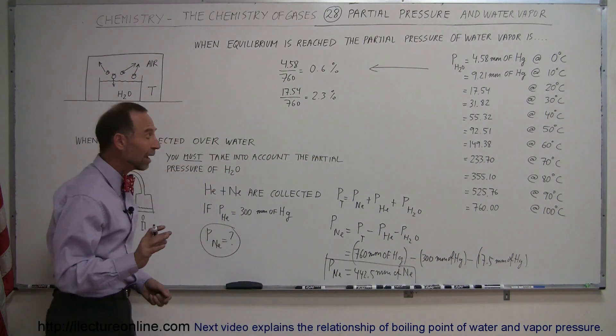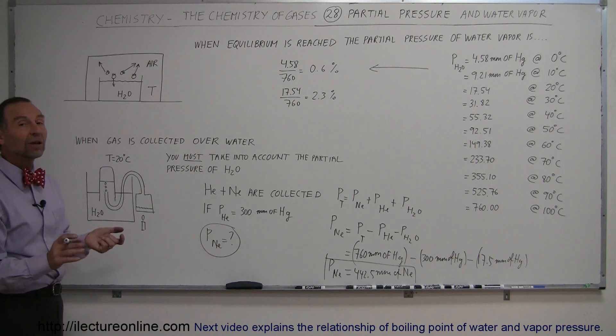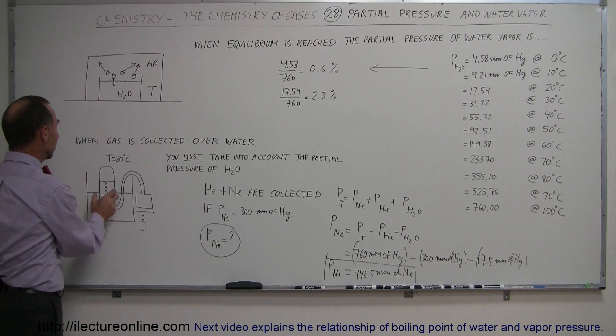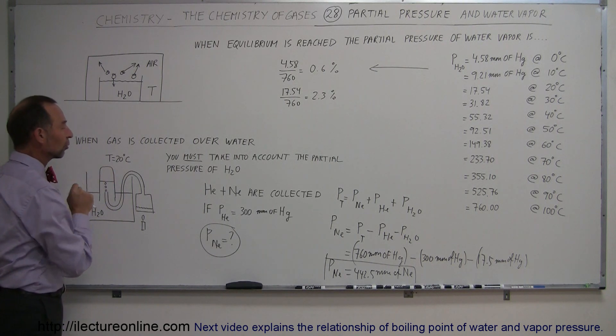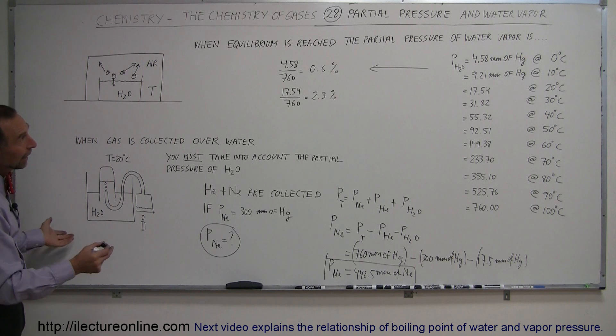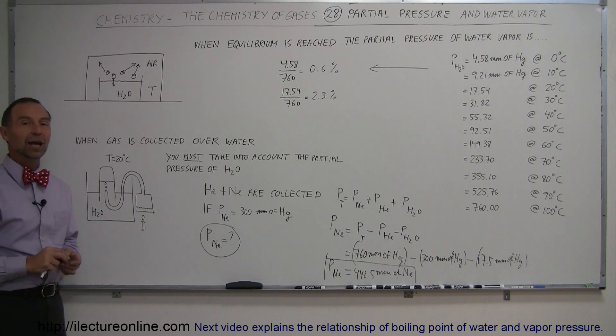So notice that we do have to take that into account in more ways than one. Here's one example: when we collect gases over water, part of the pressure that makes up the collected gas will also be the water vapor that evaporates into that environment. And that's how we look at partial pressure and water vapor.